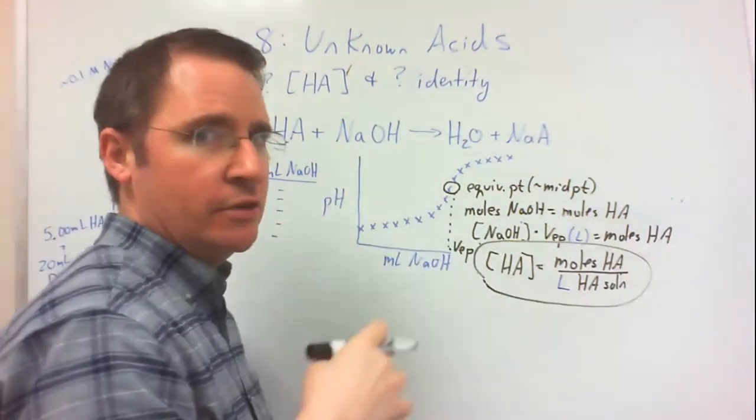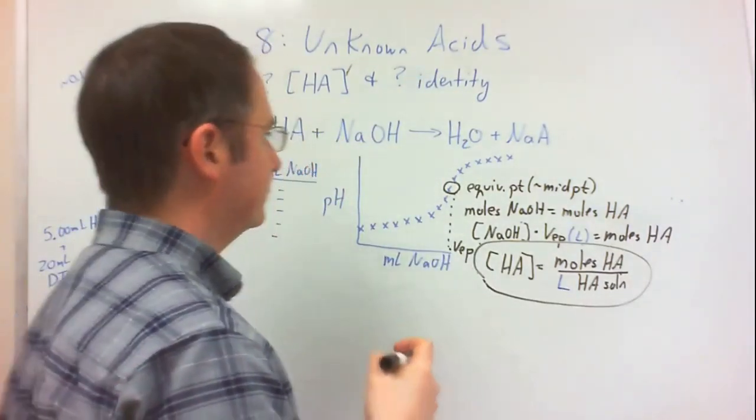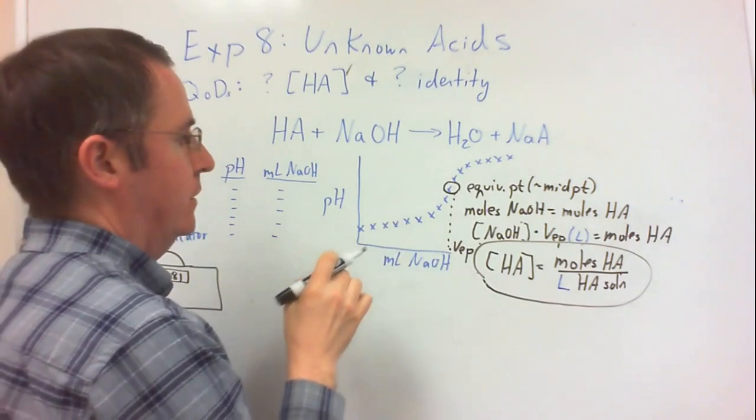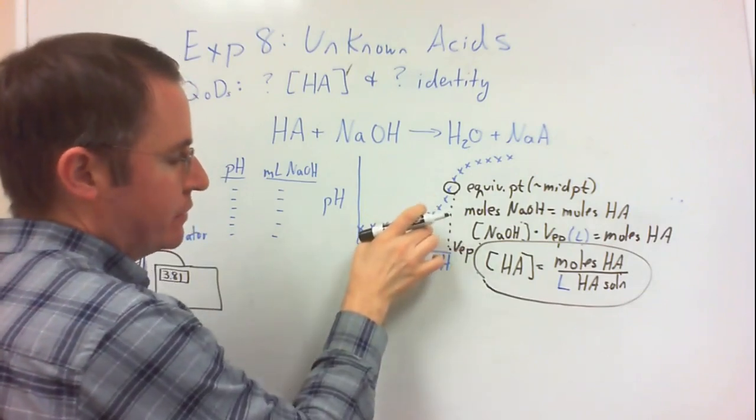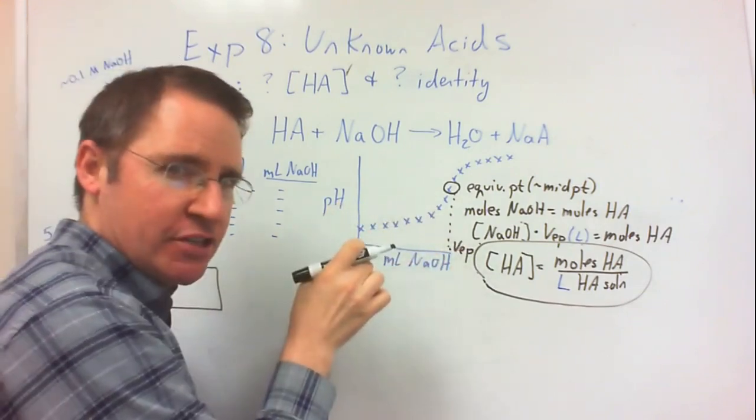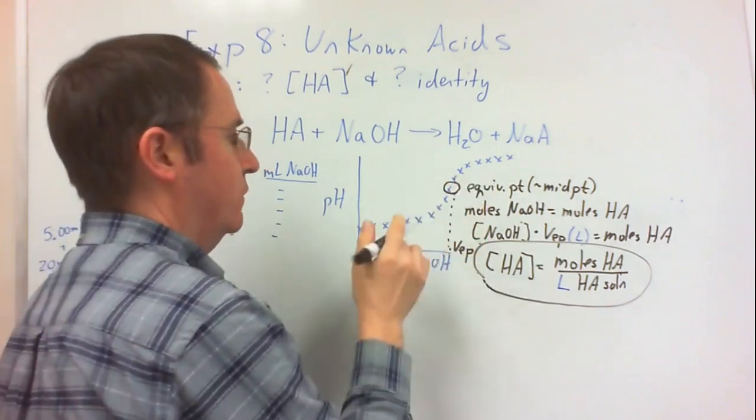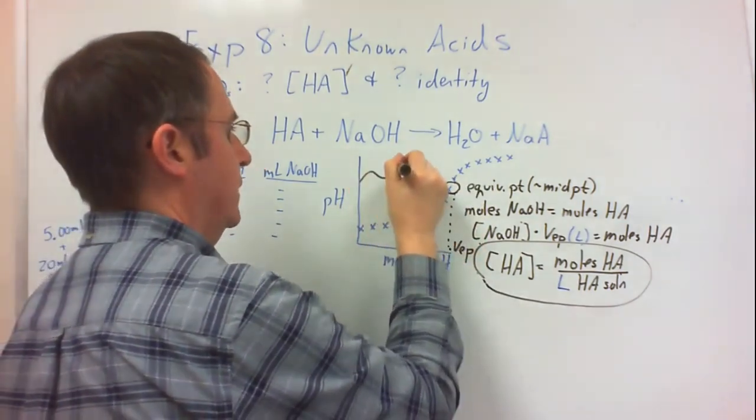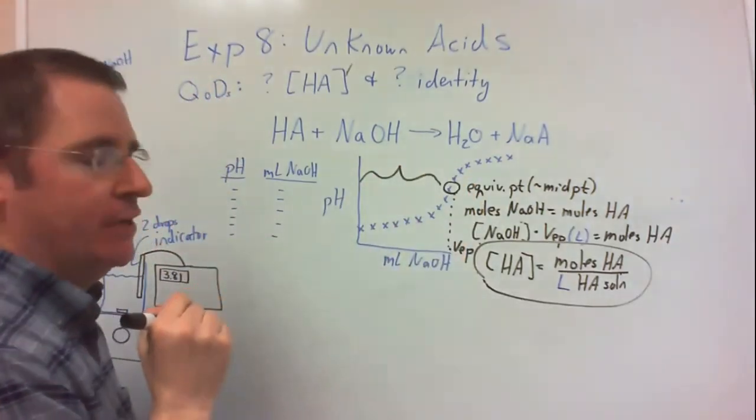And then to find the identity, we'll also use the same set of data. This time, though, we'll look at a different point. We'll look at this region of the titration curve after the titration started, but before we reach the equivalence point. So approximately in this region of the curve.